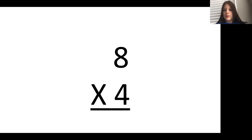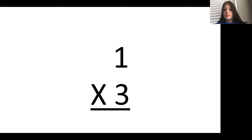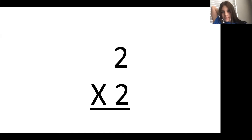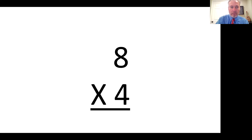32. 8 times 4 is 32. Good. This one? 3. This one? 0. Good, this one? 8 times 4 is 32. Good, this one? 3. Good, this one? 4. Good, this one? 0. 6. Good, this one? 8 times 4 is 32. Excellent.